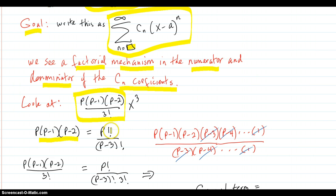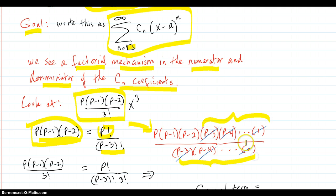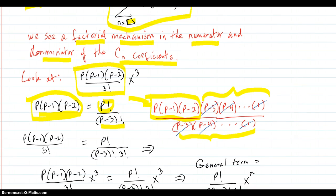This is p factorial all the way down to 1, divided by all the stuff we don't want. We want it to stop at p-2, so we divide by p-3 factorial. So p factorial is p, p-1, p-2, p-3, p-4, all the way to 1. If we just want up to p-2, we divide by p-3 factorial — it all cancels out and leaves us with what we wanted.